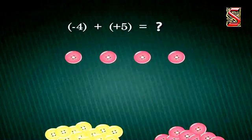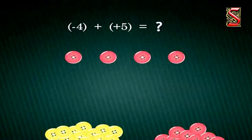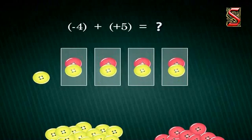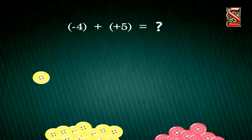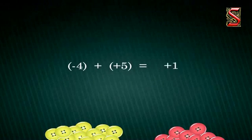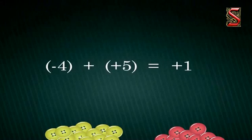Now, let us add negative 4 with positive 5. Take four red buttons for negative 4 and five green buttons for positive 5. Pairing the red and green buttons, four pairs are formed which get cancelled. Here, we are left with one green button whose value is positive 1. Therefore, negative 4 plus positive 5 gives positive 1. You can create such fun activities at home with new things too.